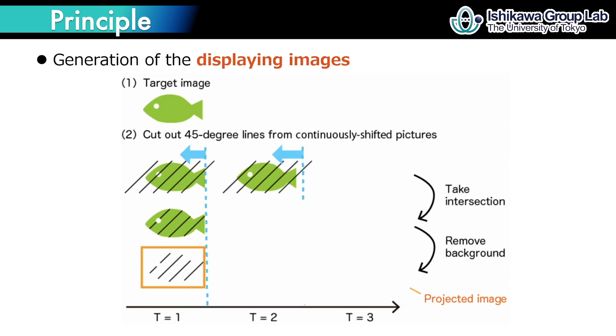In the projection, binary images are generated by taking intersection between the target image and 45-degree lines.